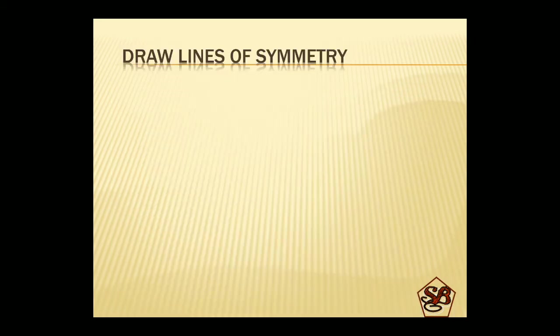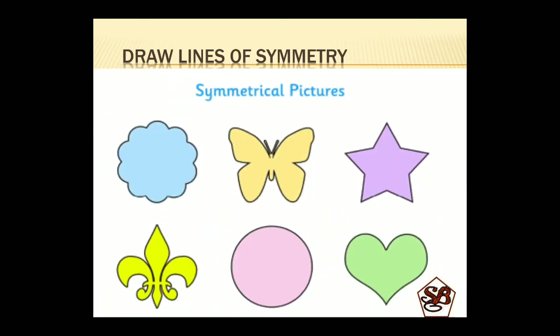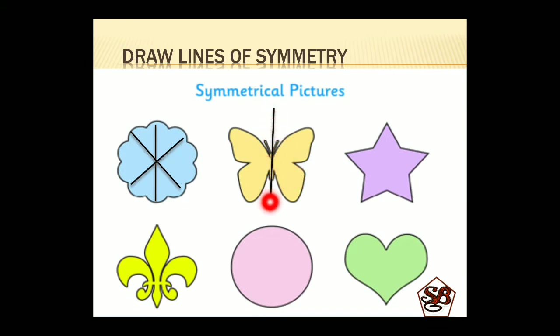Let's make it more clear by doing it ourselves. Here are some figures and we have to draw the line of symmetry of these pictures. The first one is a flower in a circular shape, so this can have one line of symmetry like this, another like this, then a vertical one. Now moving to butterfly — a butterfly has only one line of symmetry, that is in the center.